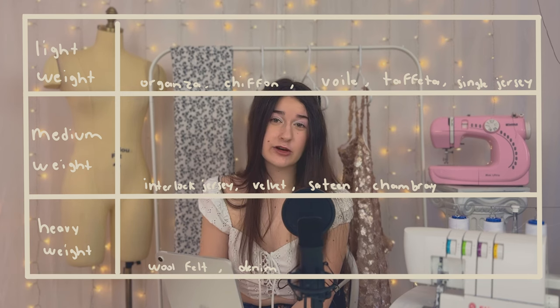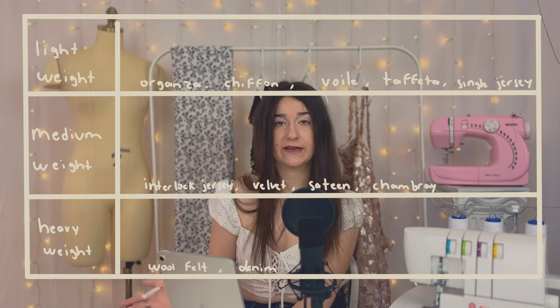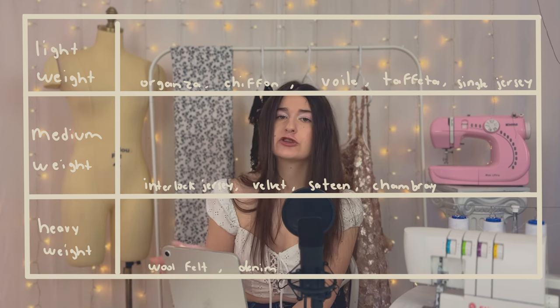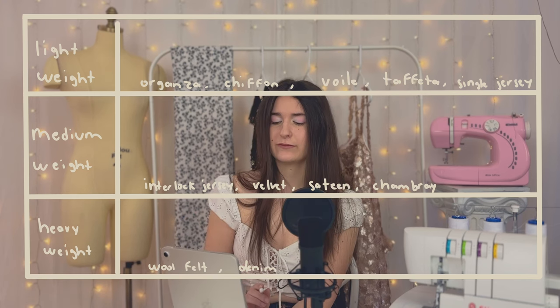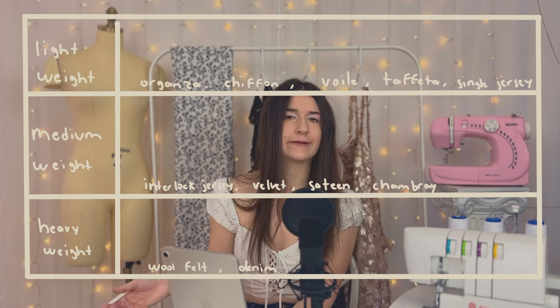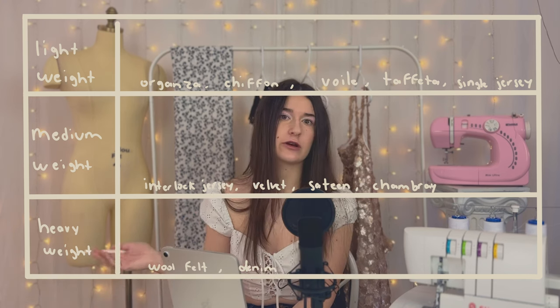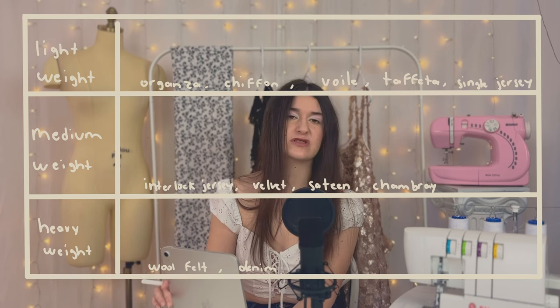Single jersey is a lightweight fabric and interlock jersey is a medium weight fabric. I put together a chart of all the different types of fabric divided into weight categories, so you can write that down in your sewing bible and come back to it when you're at a fabric store — it's going to help you choose the right fabric.